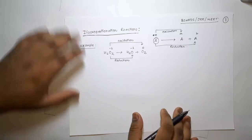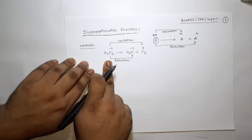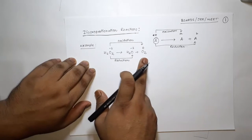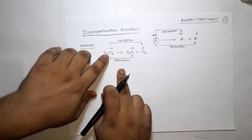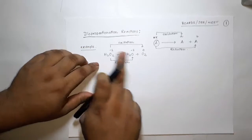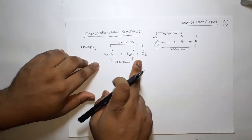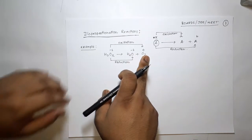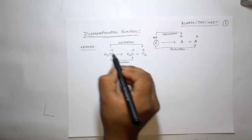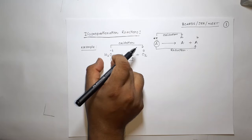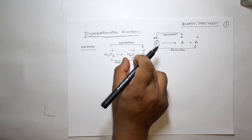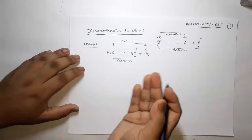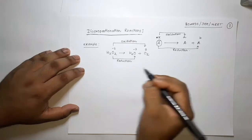So in the hydrogen peroxide decomposition, the hydrogen peroxide simultaneously decomposes into water and oxygen. The oxygen, which was in the minus 1 oxidation state, is simultaneously getting oxidized to 0 and reduced to minus 2. You can think of it this way: from an intermediate oxidation state, the element can go to both the highest and the lowest oxidation state.